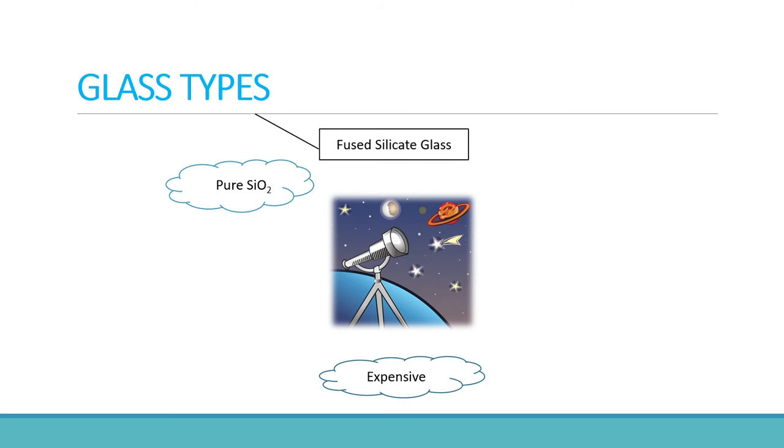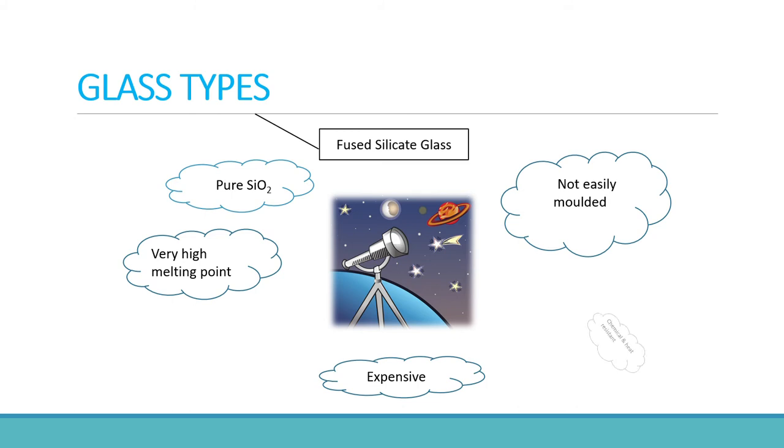These types of glass have very high melting point, and this makes it difficult to be molded into different shapes. These glasses are also heat and chemical resistant. It is also transparent to ultraviolet rays.